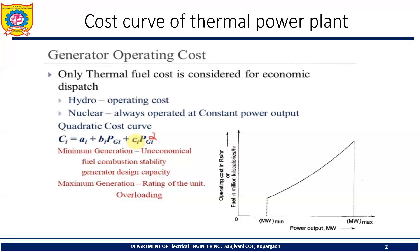Now, if you observe, the cost curve of a thermal plant has a convex structure. The y-axis represents the operating cost per hour, and the x-axis represents the output power in megawatts.